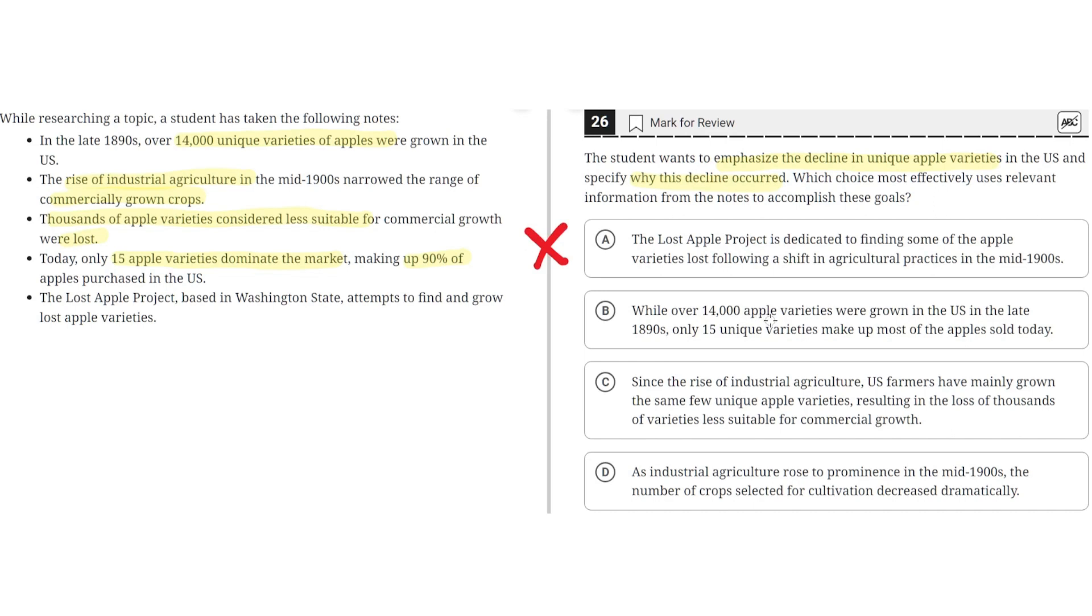B: While over 14,000 apple varieties were grown in the U.S. in the late 1890s, only 15 unique varieties make up most of the apples sold today. This is incorrect because although it does emphasize the decline in unique apple varieties, it does not specify why this decline has occurred. So B is incorrect.